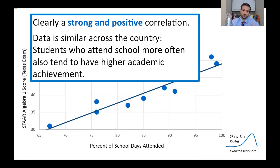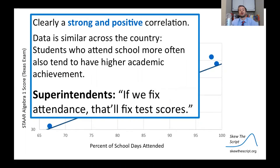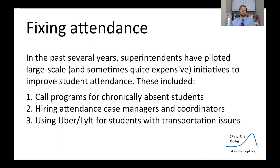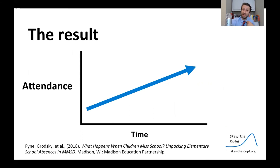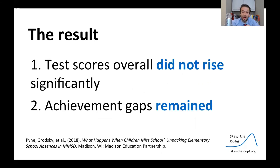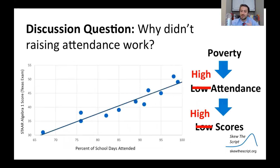So there's a clear, strong positive correlation. Superintendents see this data and say: if we fix attendance, that must fix test scores. They rolled out a bunch of policies — some costing quite a pretty penny — including call programs for chronically absent students, hiring case managers and coordinators, and even using Uber and Lyft for students with transportation issues. The result in terms of attendance was great — attendance improved over time. However, for scores, the result was not so great: scores stayed flat, with no significant rise in test scores and the achievement gap remained. One potential solution had been to ignore the input of poverty and just fix attendance, but raising attendance didn't raise scores. So our discussion question today is: why didn't raising attendance work?